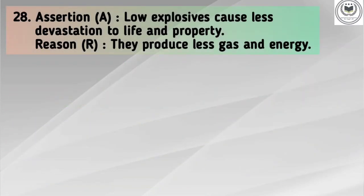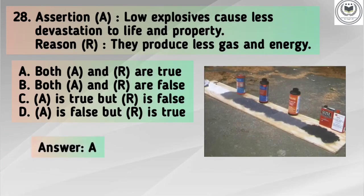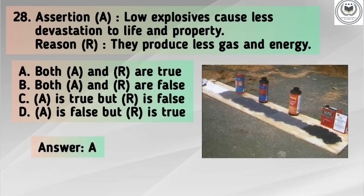Question number 28. Assertion A: Low explosives cause less devastation to life and property. Reason R: They produce less gas and energy. Options: A. Both A and R are true. B. Both A and R are false. C. A is true but R is false. D. A is false but R is true. The correct answer is option A: Both A and R are true.